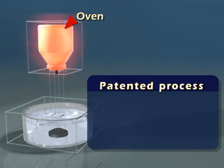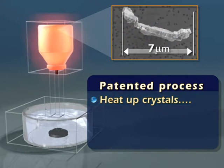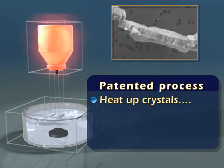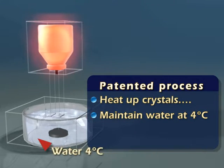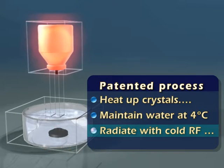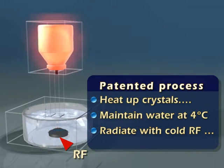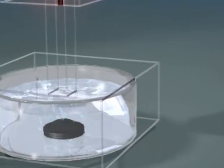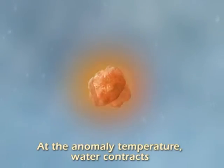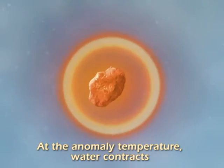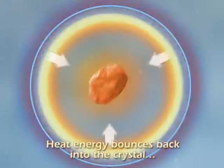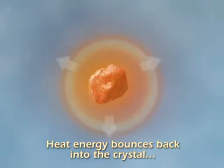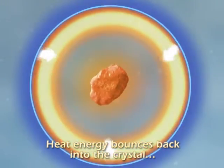To create NeoWater, an insoluble micron-sized crystal aggregate is heated and then rapidly quenched in reverse osmosis water, maintained at just below 4 degrees Celsius, while radiating it with cold radiofrequency to create gas bubbles inside. Since the water is at 4 degrees Celsius — its anomaly temperature — the heat energy from the crystals is reflected back from the water. This prevents it from reaching equilibrium by a temperature gradient.